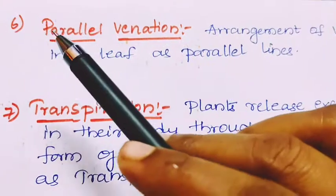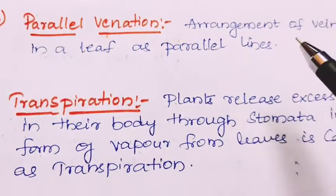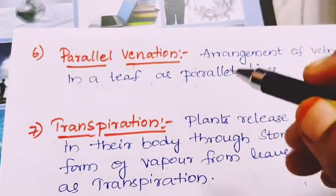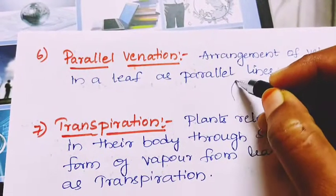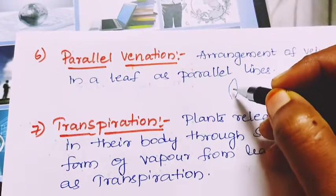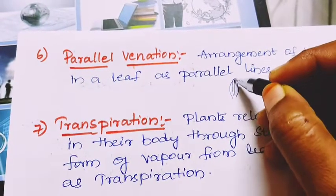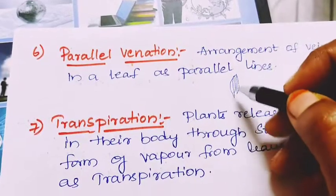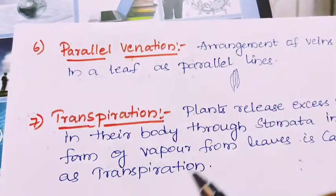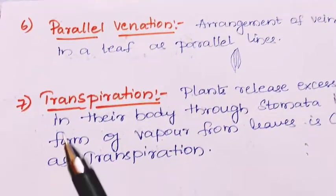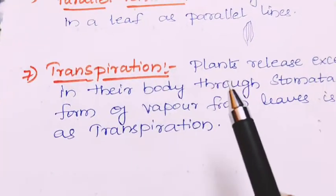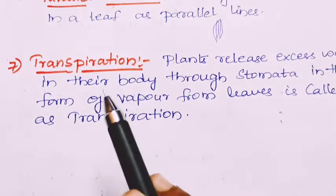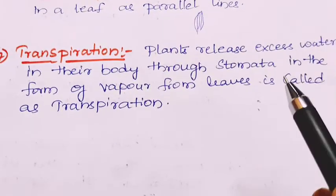Next: parallel venation. Parallel venation is the arrangement of veins in a leaf as parallel lines. When you look at a leaf with parallel venation, the veins are arranged in parallel lines, and this type of venation is called parallel venation.